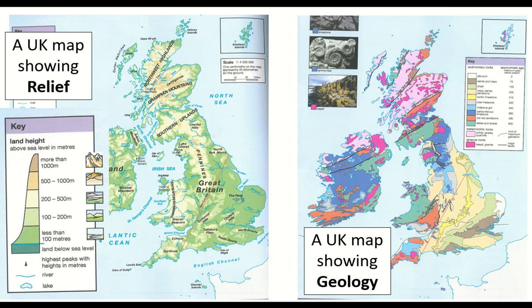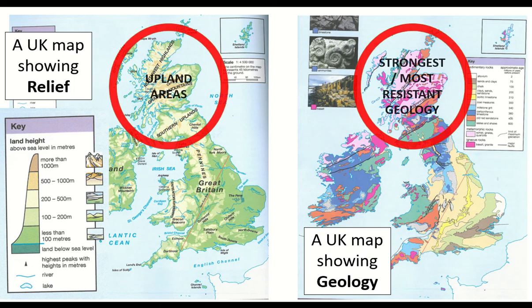I've got two maps on the screen here. The one on the left shows the relief of the UK - a relief map shows you areas of high land, low land etc. The map on the right shows the UK geology, which we've seen from last lesson and you've got a copy in your notes. Now there is a bit of a pattern emerging. At the top where you've got your granite and your metamorphic rocks you've also got your most resistant geology and alongside that you've also got your highest upland areas.